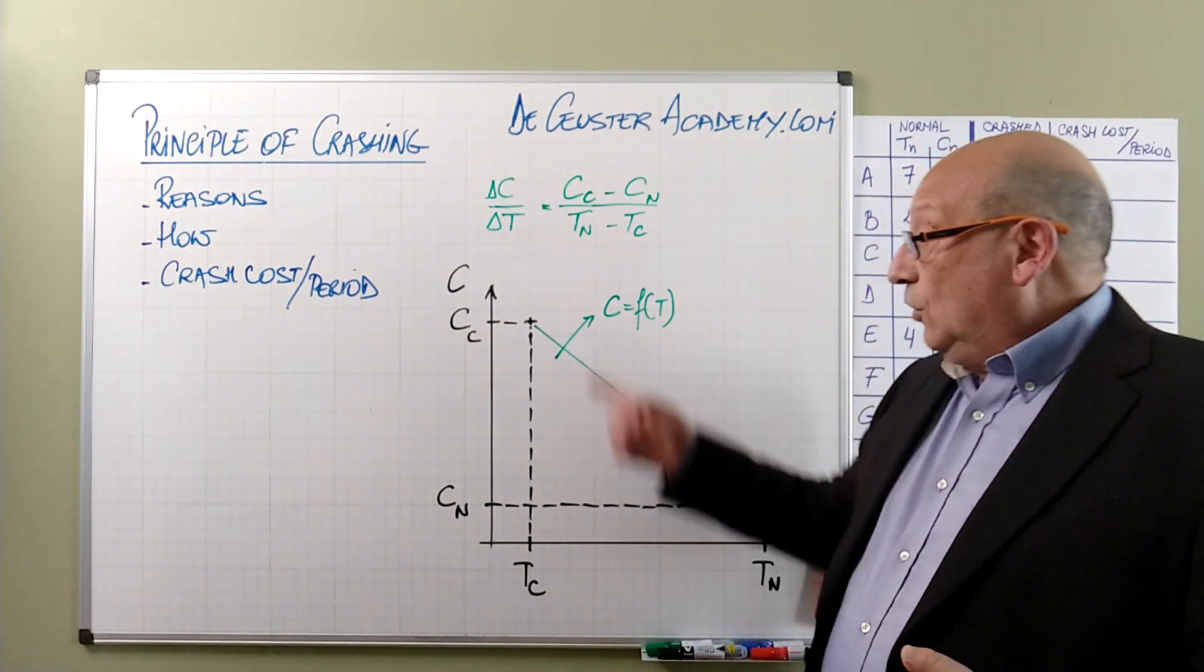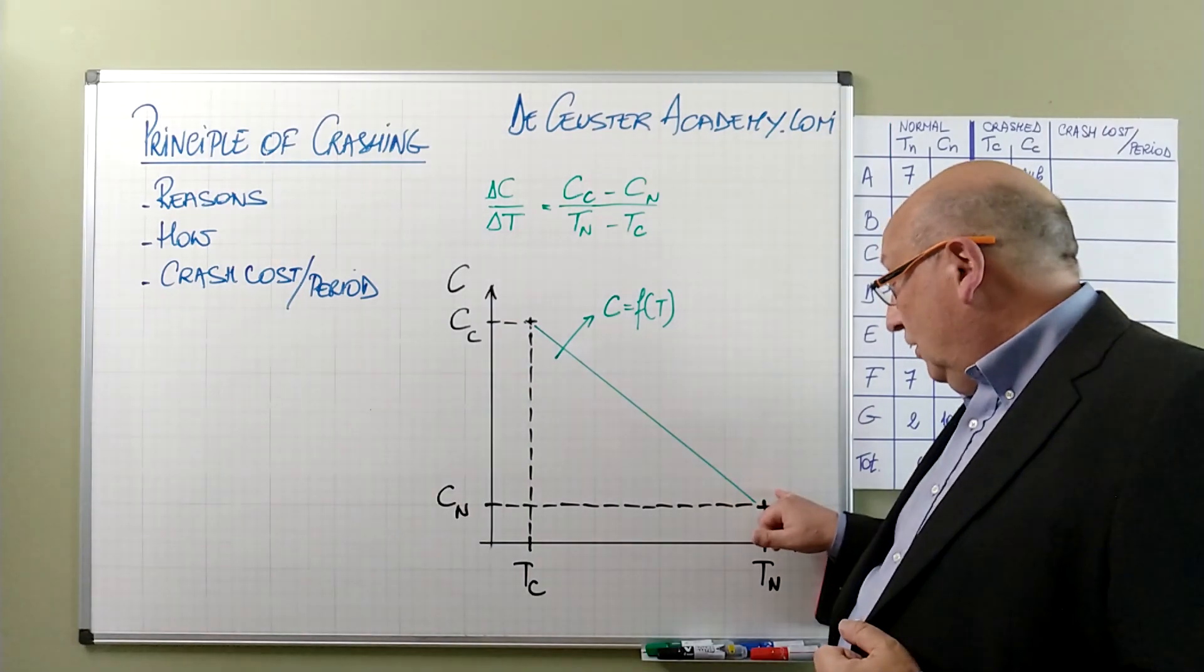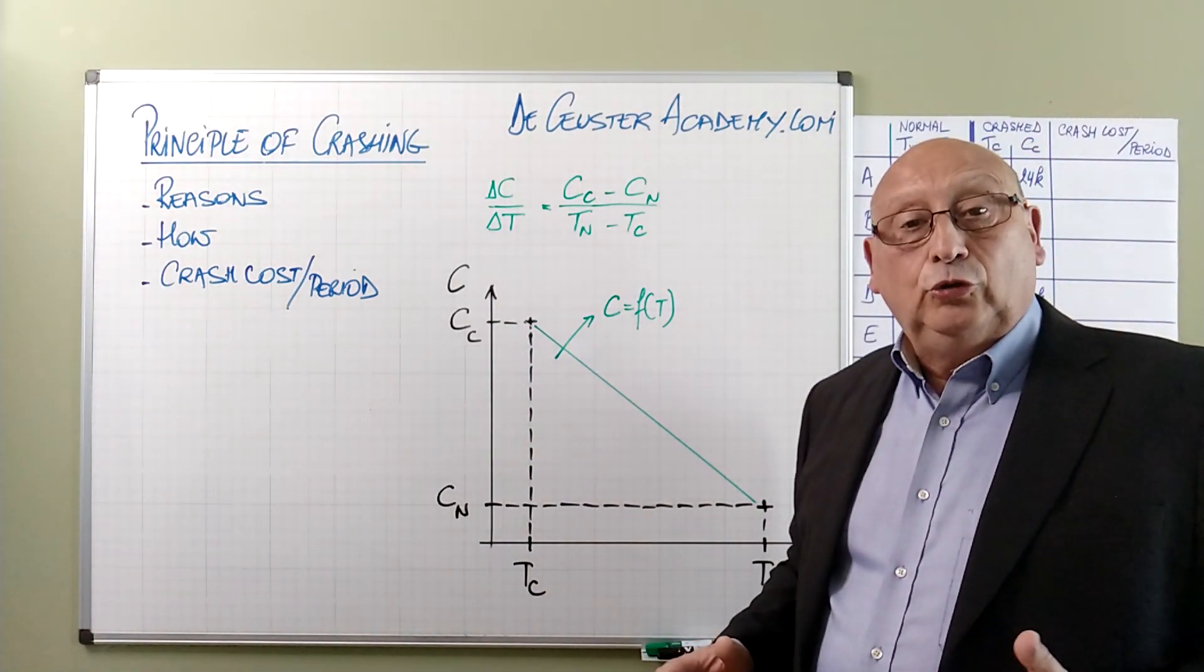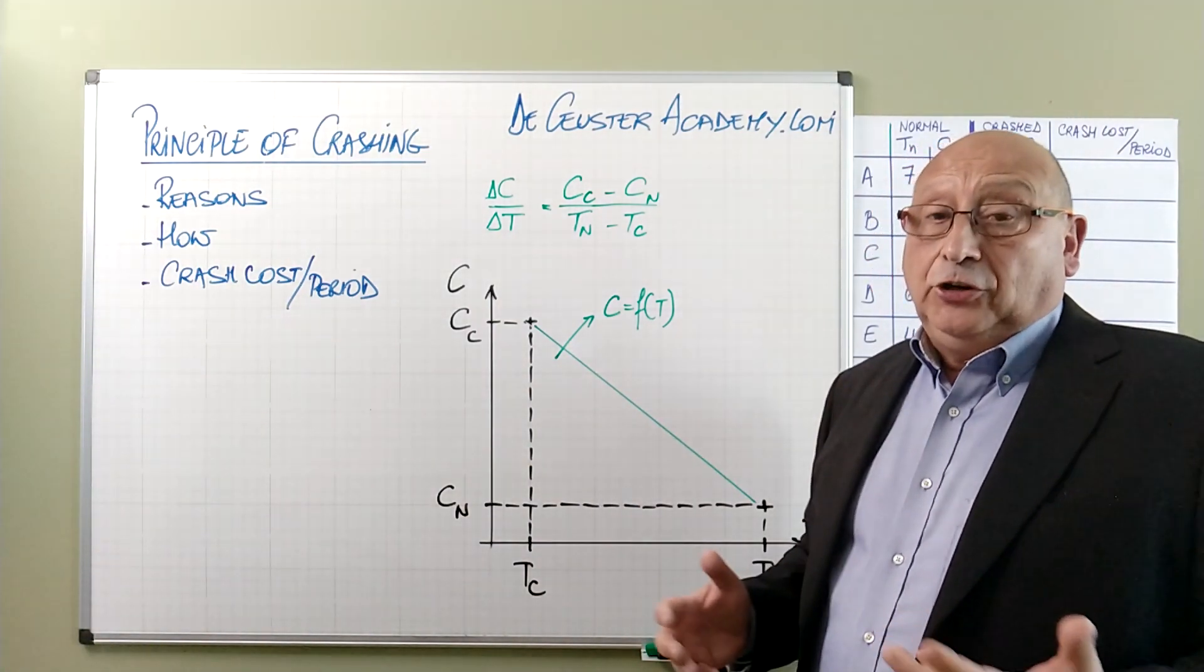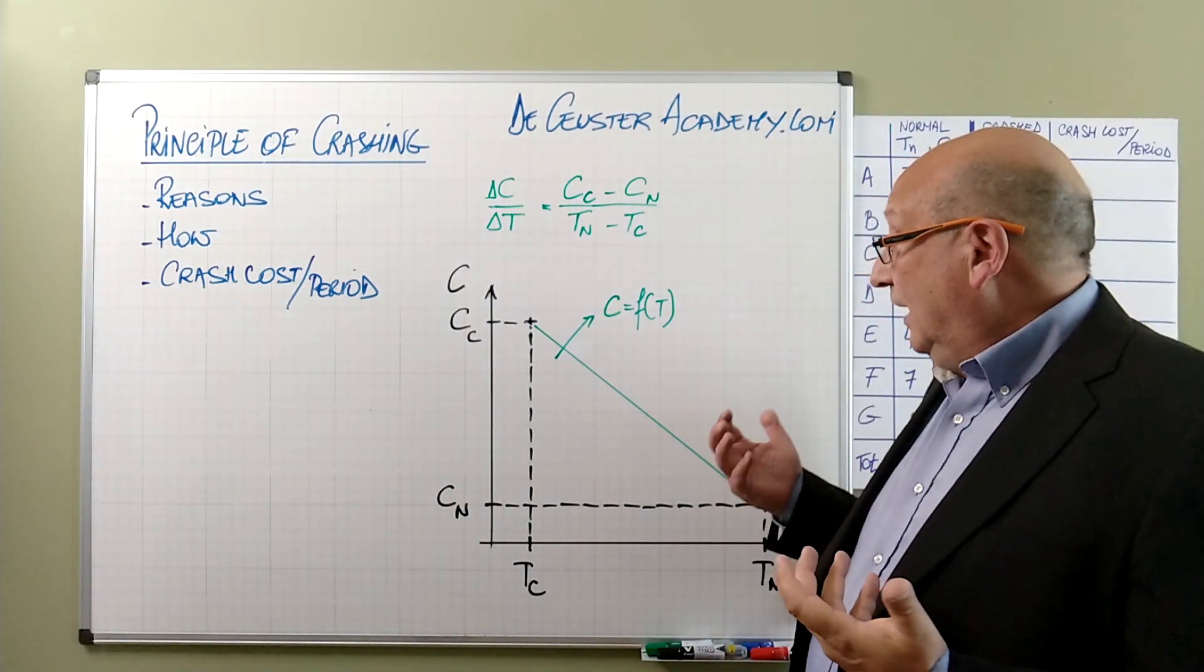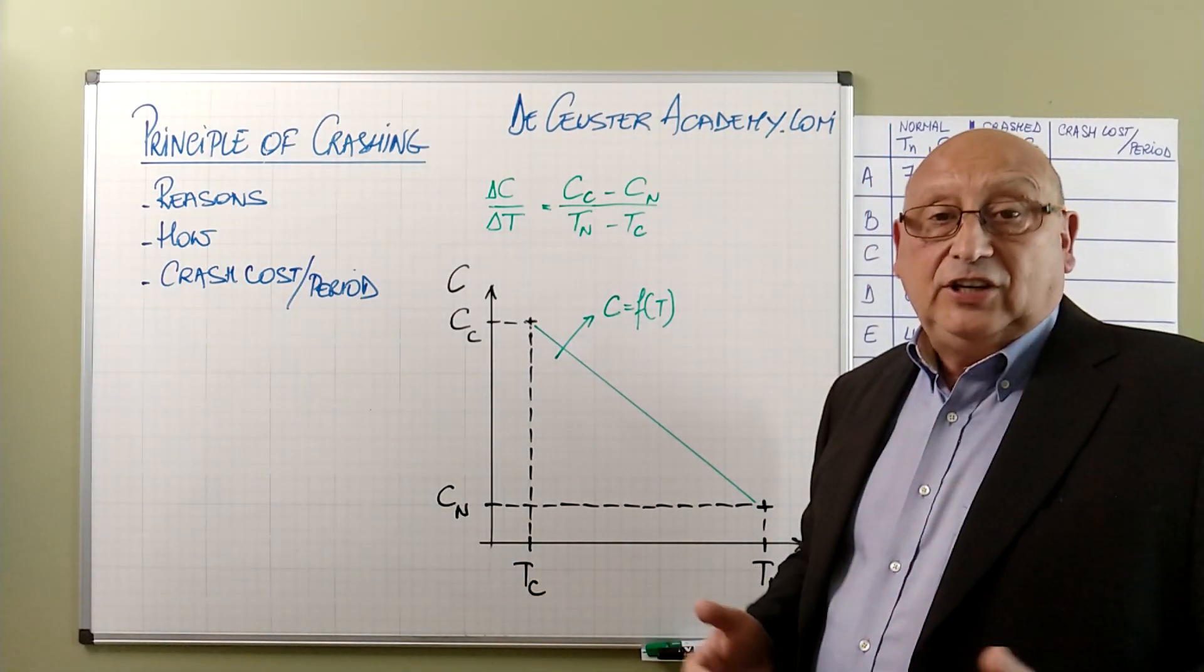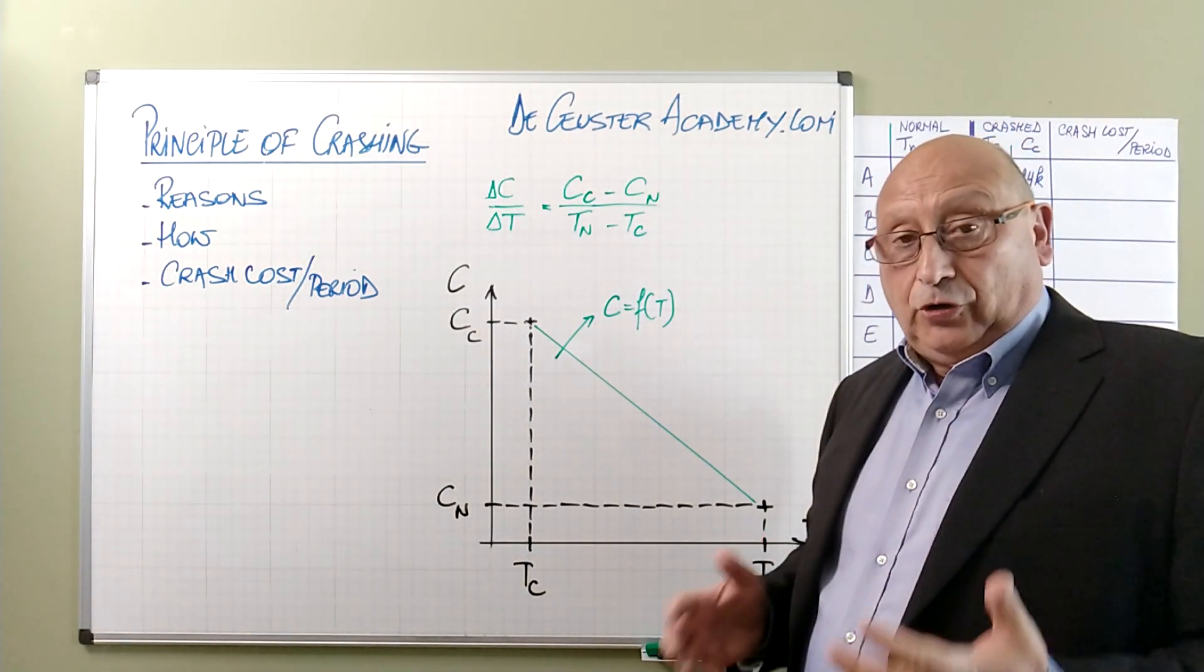So when we have the normal duration with the normal cost, we have the crash cost and the crash duration. The evolution between the two is linear. It's not necessarily true, but it is an assumption that will help us to get an easy calculation. The linearization of the problem makes it for us a lot more interesting and easier.